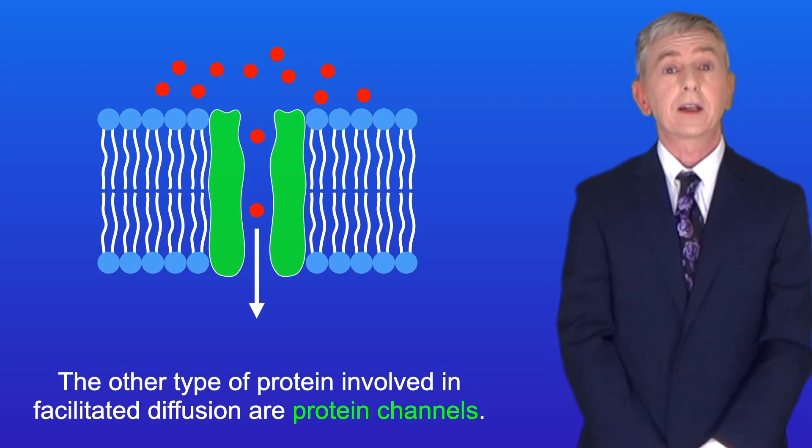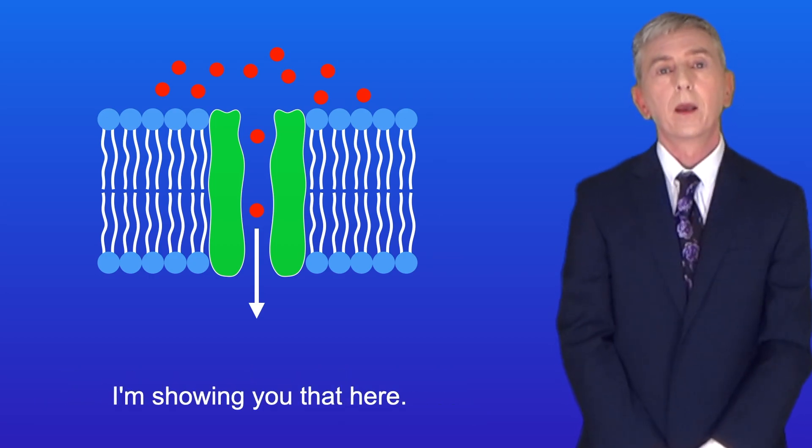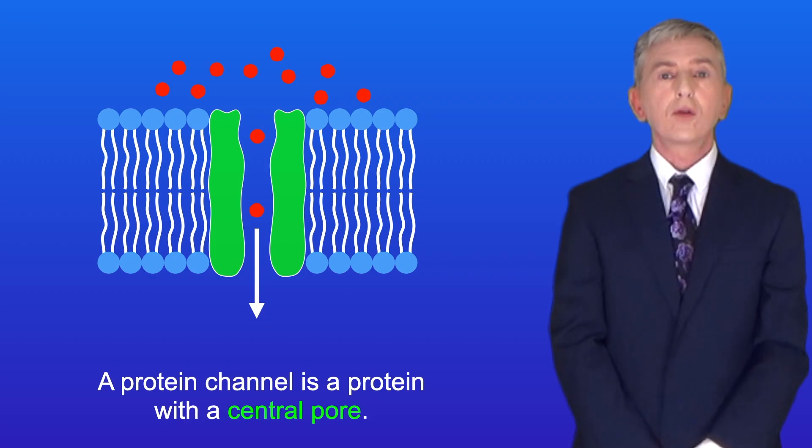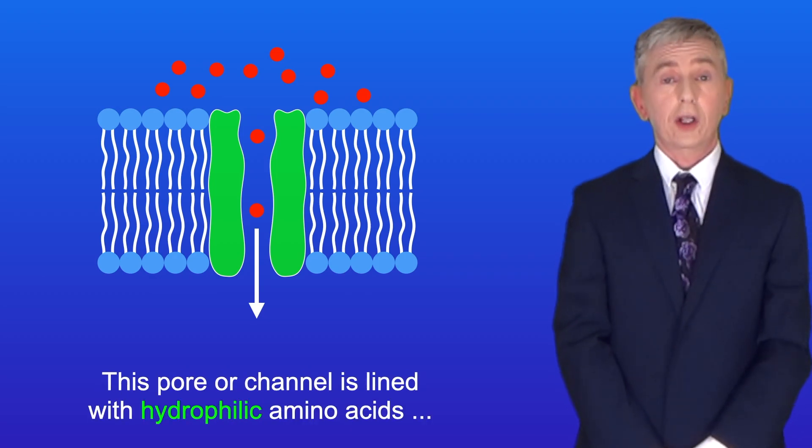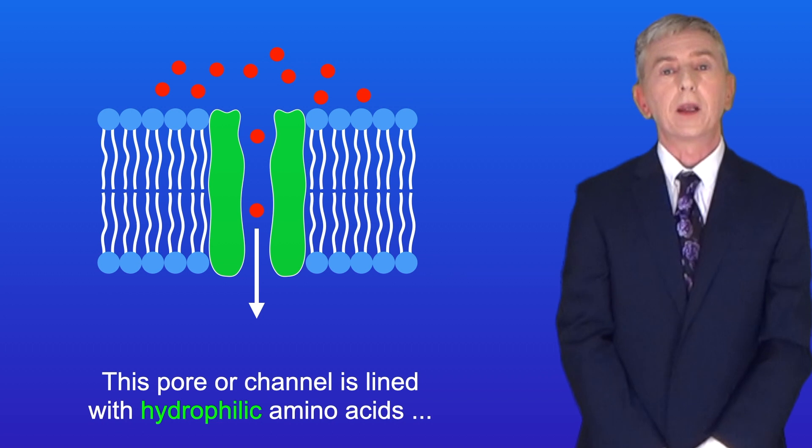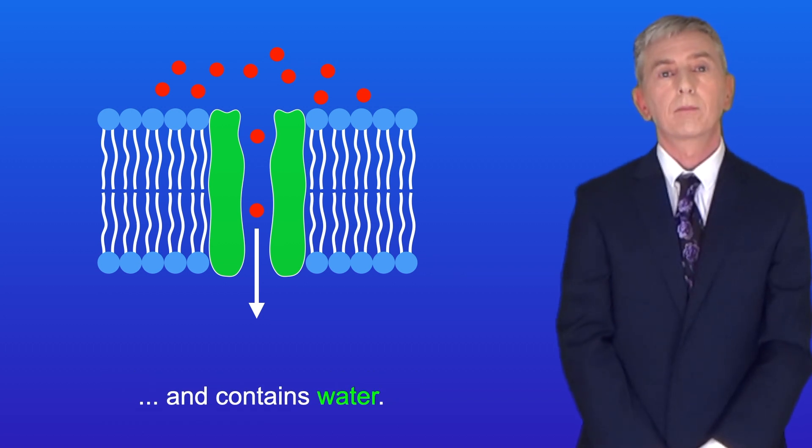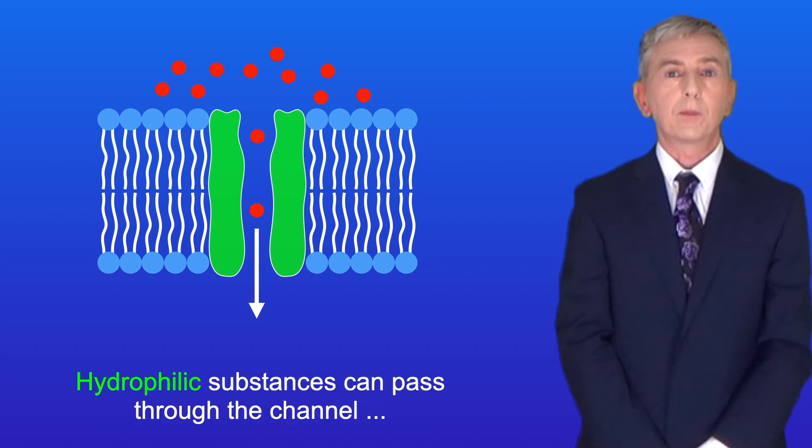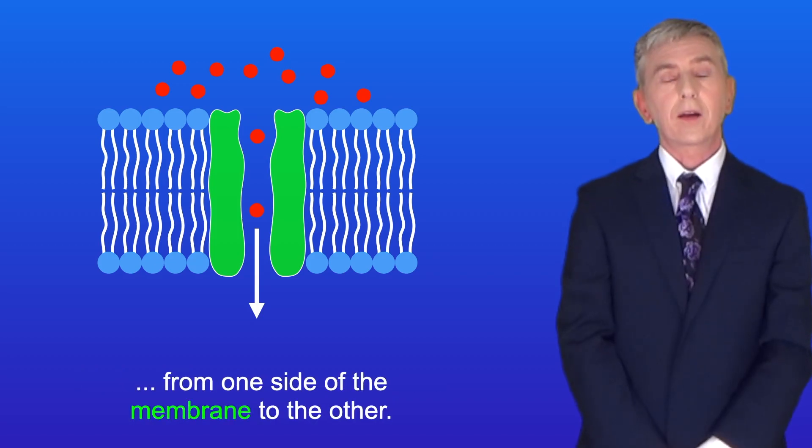Now the other type of protein involved in facilitated diffusion are protein channels, and I'm showing you that here. A protein channel is a protein with a central pore. This pore, or channel, is lined with hydrophilic amino acids and contains water. Hydrophilic substances can pass through the channel from one side of the membrane to the other.